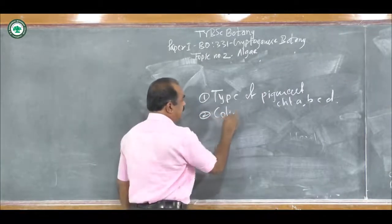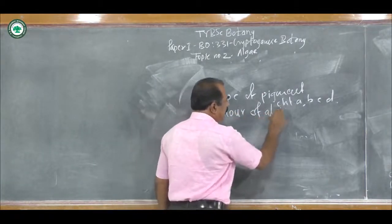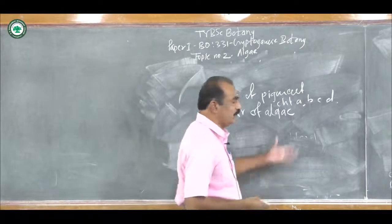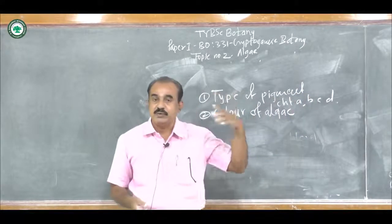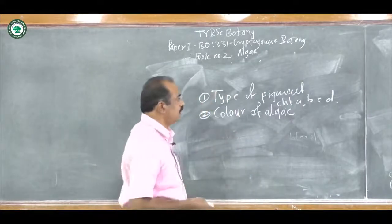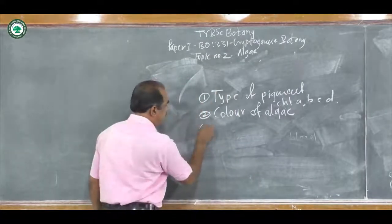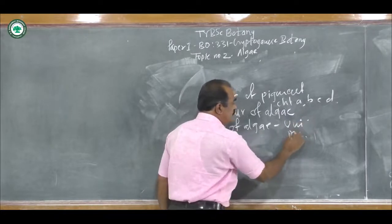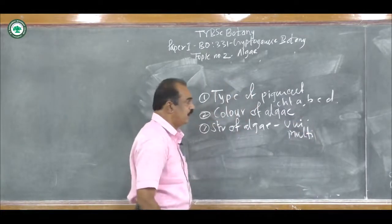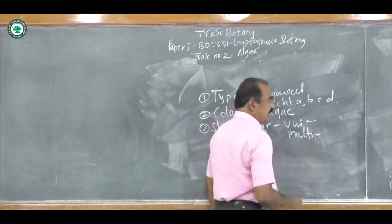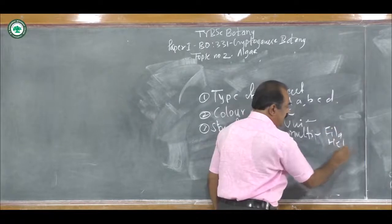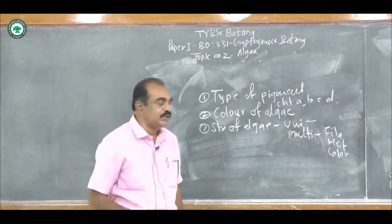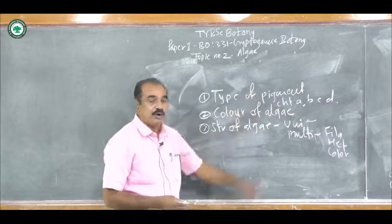Second is the color of the Algae. In Algae, there are different types of colors — for example, blue, green, yellow, brown, etc. These colors are based on the type of pigment present in the Algae. Third character is the structure of Algae. There are unicellular to multicellular different types of structures found in Algae. In multicellular: filamentous, heterotrichous, colonial, etc. There is great variation in the structure of Algae, making it an important morphological character for classification.